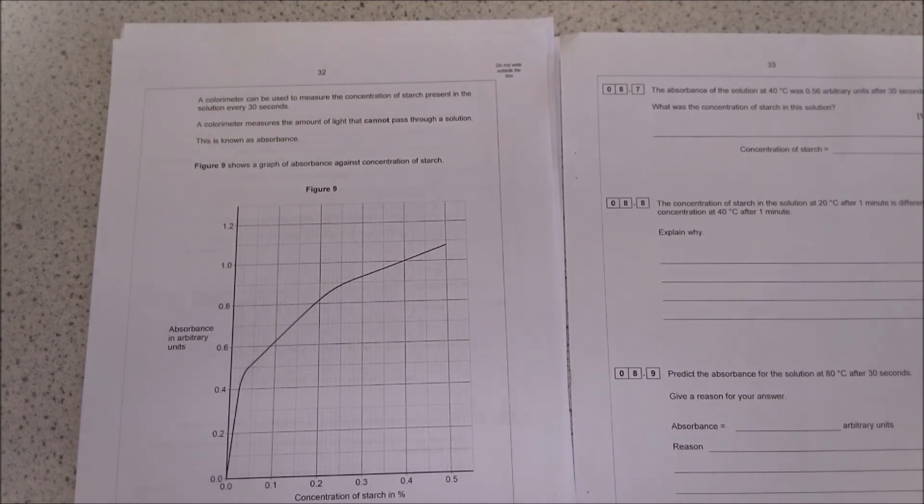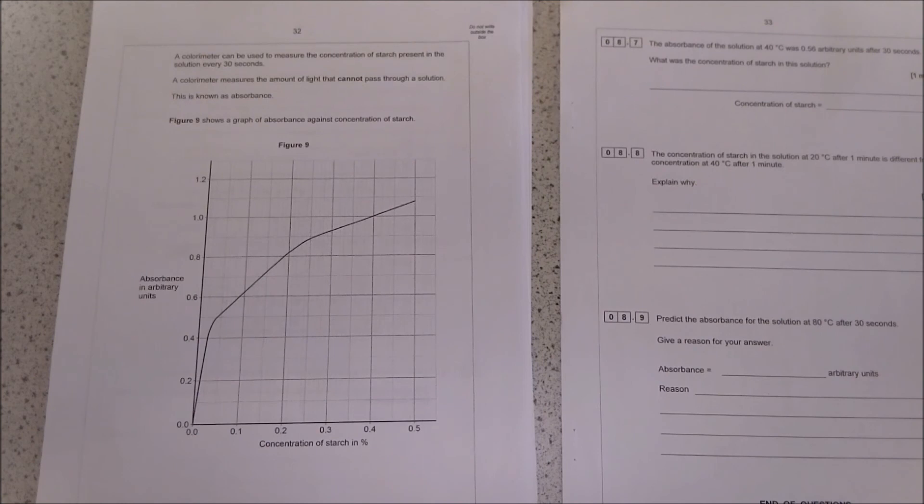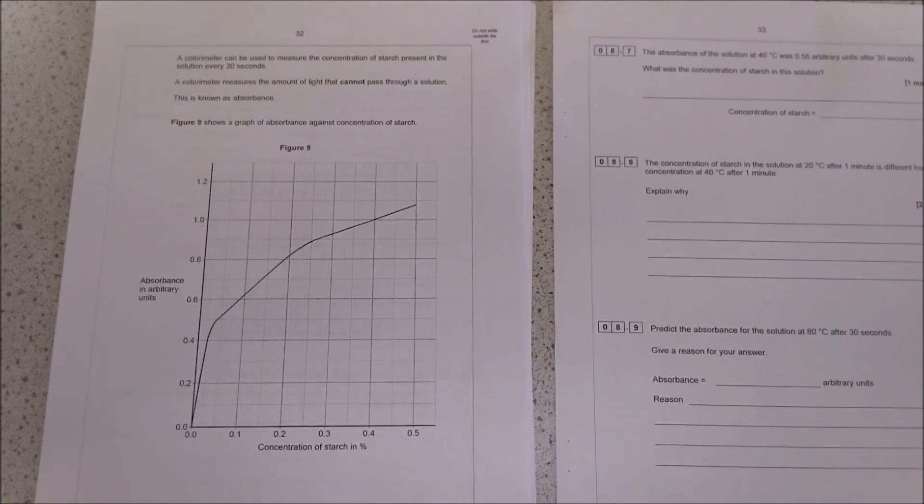This is all about talking about the optimum conditions for enzymes to work at. Enzymes will be working faster at higher temperature because it's closer to the optimum temperature. You might want to talk a little bit about collision theory. There'd be more collisions, so therefore the rate of breakdown would be greater. Finally, predict the absorption of the solution at 80 degrees centigrade after 30 seconds and give a reason why.